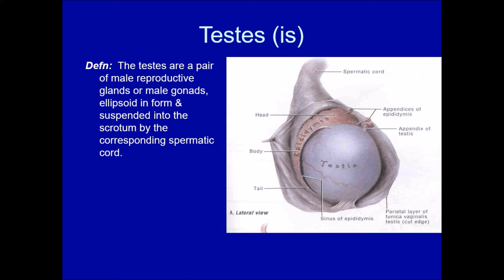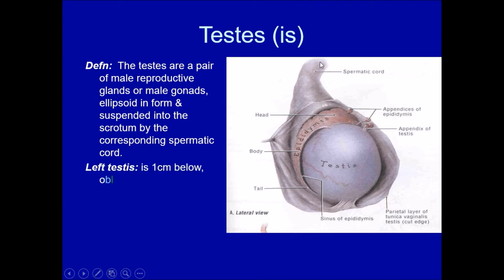The testes are present within, or suspended within, the scrotum by a cord called the spermatic cord. Looking at both testes, the left testis is about one centimeter below the right testis — the right testis is higher up. You should not think this is abnormal; this is a normal position. The left testis is slightly lower and the right testis is slightly higher up, and it is tilted forwards as well as laterally.